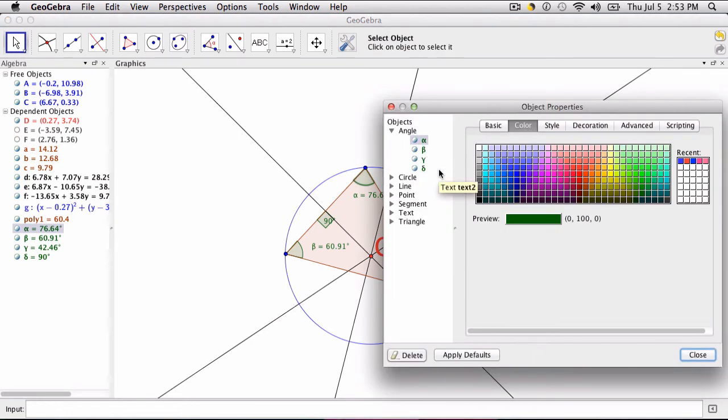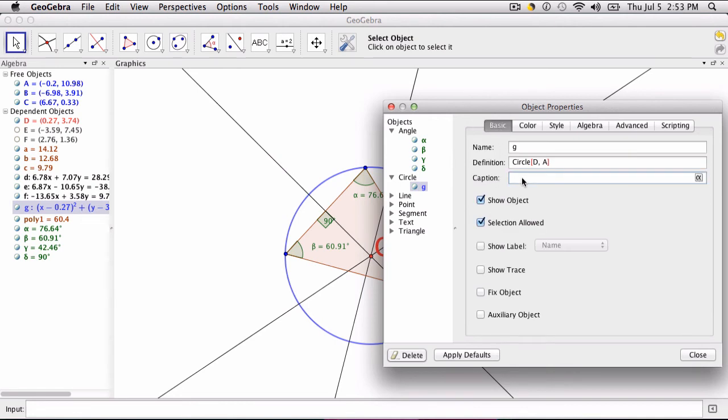So an easy way around that in your object properties, you can hit Ctrl-Cmd-E, go to your circle, and under basic, that's where you put the caption that this is the circum-circle.